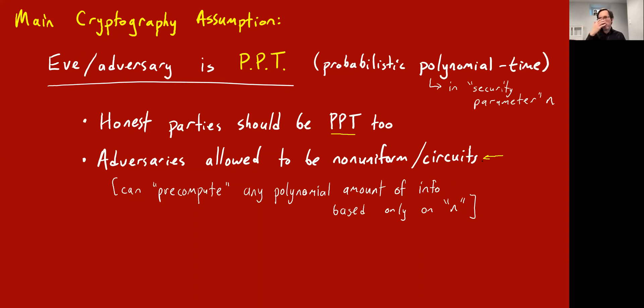We talked about this way back in lecture 3 or something, what this means. Basically, you imagine they can be circuits, or in other words, that they can have a different algorithm for different values of n. And, in turn, what that means is, it basically means they can pre-compute any amount of information based only on n, the length of the security parameter.